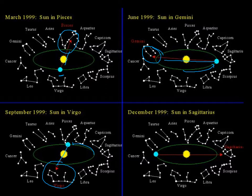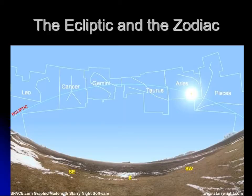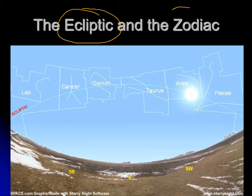In the ancient world they didn't realize Earth was moving — it just looked like the Sun was shifting around the sky. So they came up with a term: the apparent path of the Sun through the sky over the course of a year is called the ecliptic. The constellations the Sun appears to pass through over the course of the year are known as the zodiac.